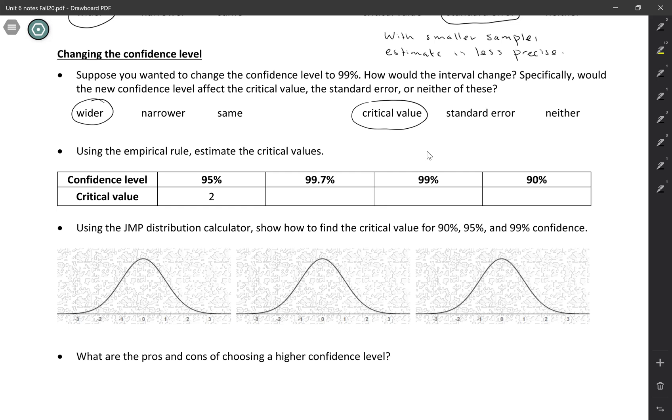So let's think about critical values first, just based on the empirical rule. We had picked two as our multiplier in the first video because we wanted a 95% confidence level, and we know that if we go out two standard errors, we'll be capturing about 95% of the value. The empirical rule also says that if we want to get 99.7% of the values, so if you wanted 99.7% confidence, you would need a critical value of three.